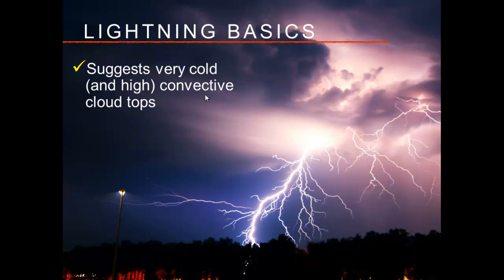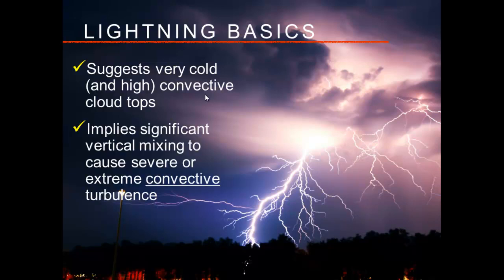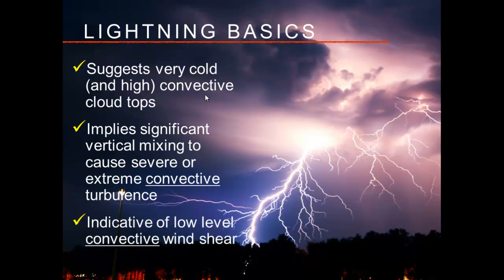Lightning suggests you have very cold and very high convective cloud tops — you have depth to those clouds — which implies significant vertical mixing that may cause severe or extreme convective turbulence. Any time you see lightning, also worry about low-level convective wind shear. You might have a gust front or outflow boundary ahead of the convection. That gust front may be 10 to 15 miles ahead of the primary precipitation on your NEXRAD, and you may still have wind shear well ahead of any rain.